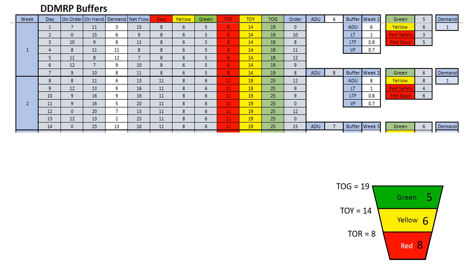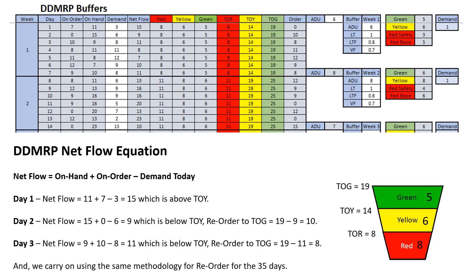Let us see how the DDMRP simulation works. The net flow calculation is equal to on-hand plus on-order minus today's demand. The net flow for day 1 works out to be 15, which is above the top of yellow, and no replenishment order is required. Day 2, the net flow is calculated at 9, which puts us in the yellow zone, and we need to order 10 to reach the top of green at 19. Day 3, net flow is in the yellow at 11, so we need to reorder 8 to get to the top of green. We continue with this process for the 35 days.